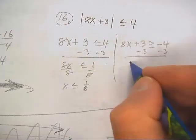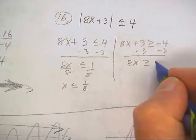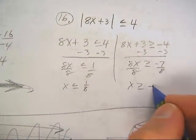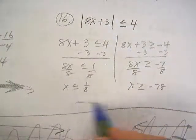Subtract 3. 8x is greater than negative 7. Divide by 8. x is greater than negative seven eighths.